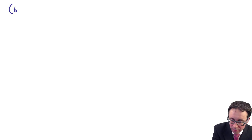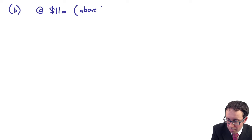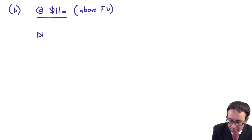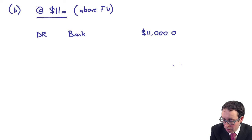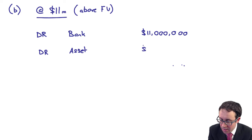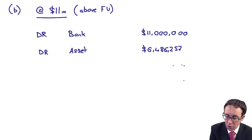In scenario B, that is at the 11 million, which is above fair value. What we've got here, effectively, is we've borrowed $1 million more. So what you've got there is that you debit the bank with the 11 million. You still debit the right-of-use asset with the $6,486,257. Remember, you would still work that all out based upon fair value.